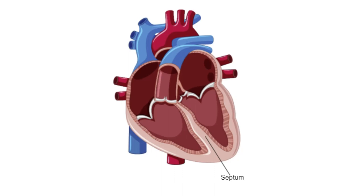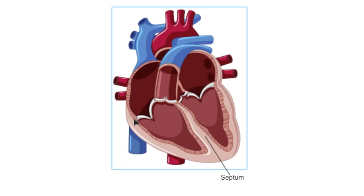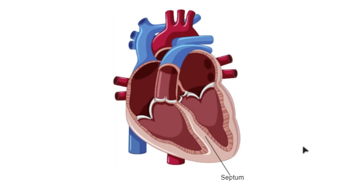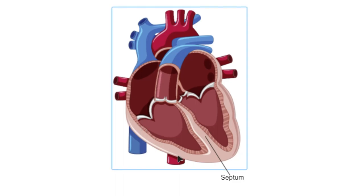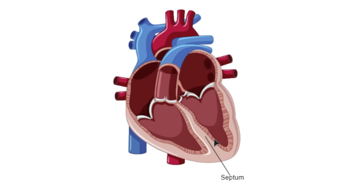When we're looking at the diagram, this is our left and this is our right, but imagine you're looking at someone else's heart that is standing opposite you. So while this is your left, this is actually the person's right-hand side, and whereas this is your right, it is the person's left-hand side. Therefore, we refer to this side as the right, and this side as the left.